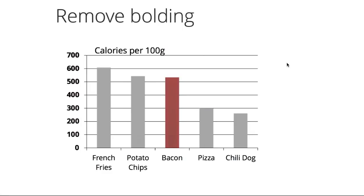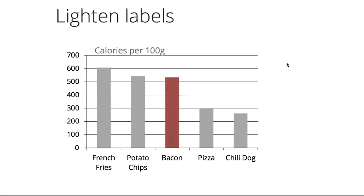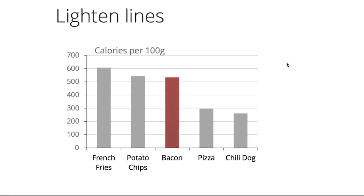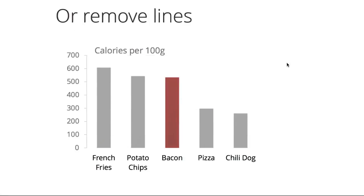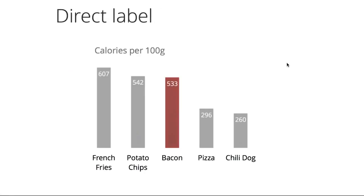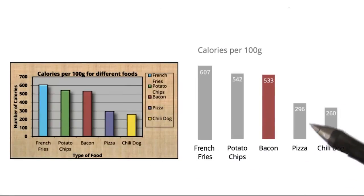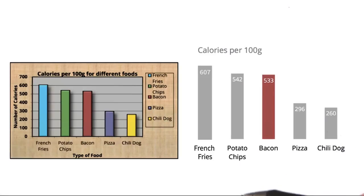We can also make the data stand out by reducing the boldness of the labels and the grid lines. If we want to go even further, we can remove the lines entirely and encode the values directly into the bars themselves. Comparing the two visualizations side by side, you can easily see the effect of improving the data-to-ink ratio. The visualization with the high data-to-ink ratio is far more clear, more interpretable, and that's all the elements you need for a great visualization.